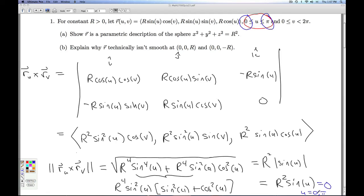What points correspond to u equals 0? I plug u equals 0 back into the original vector value function. I get (0, 0, positive r). When u is pi, I get (0, 0, negative r).